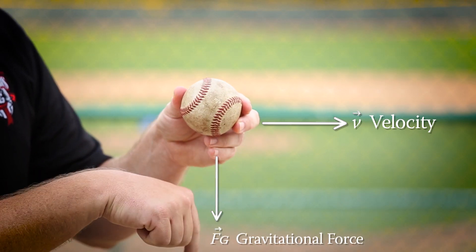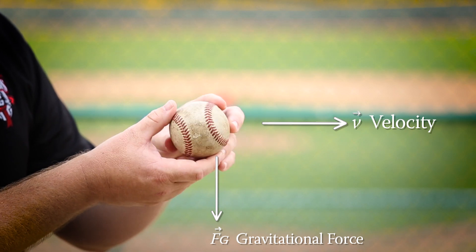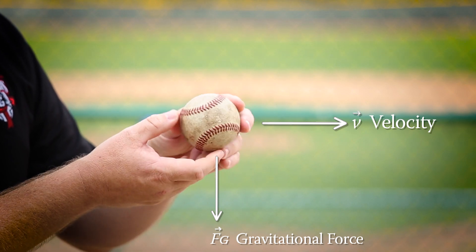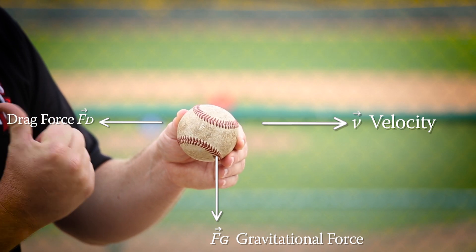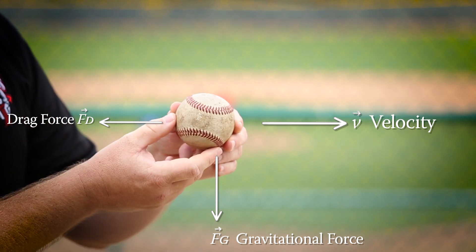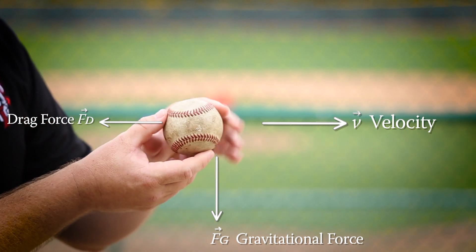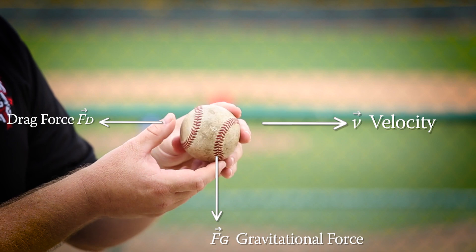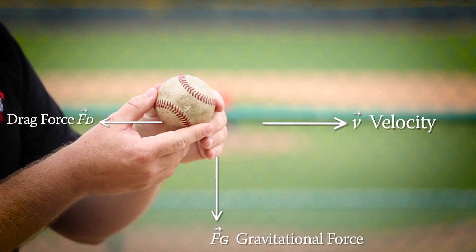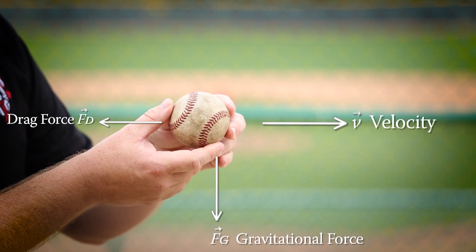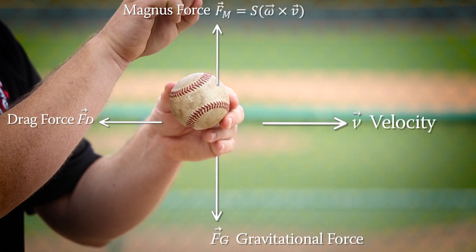Pointing down, we have the force of gravity, always there and insatiably pulling the ball downwards. Pointing backwards from the velocity, we have the force of drag, which tends to slow the ball down as it pushes through the fluid — in this case, air. We also now have the Magnus Force, F sub M, which in this case is pointing up.